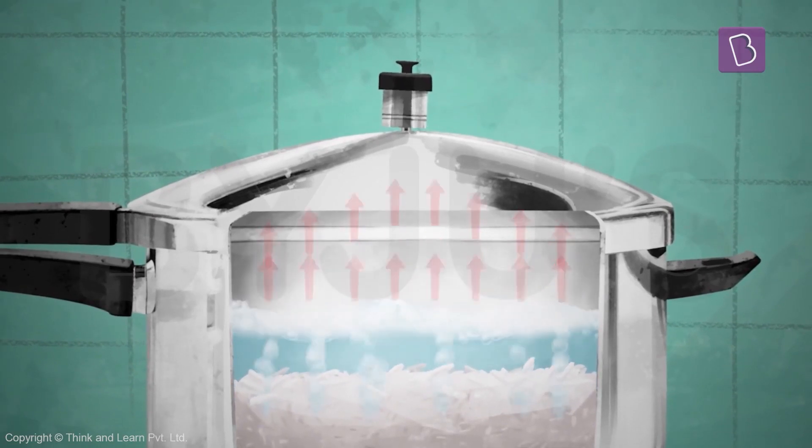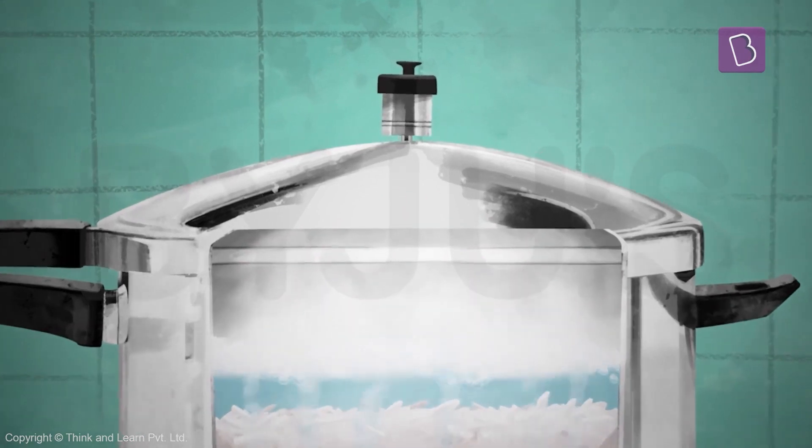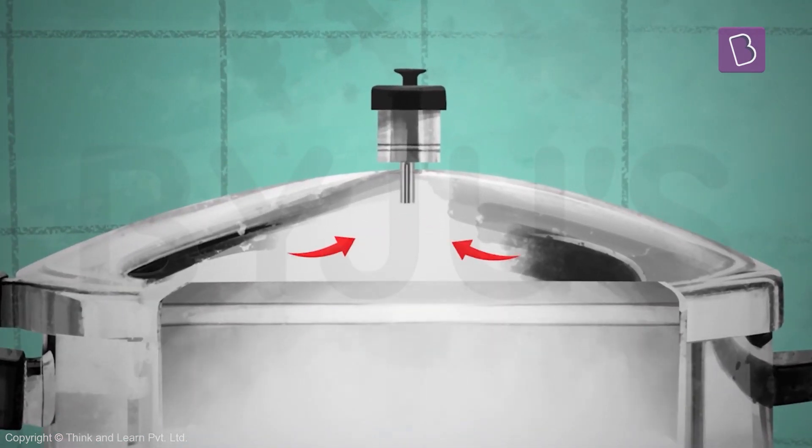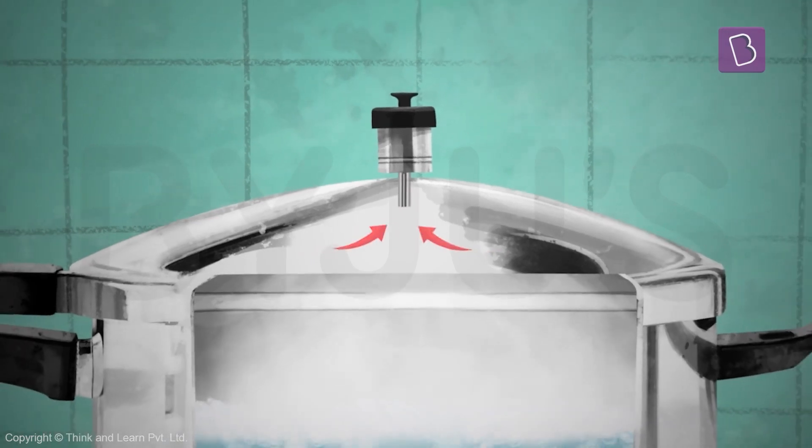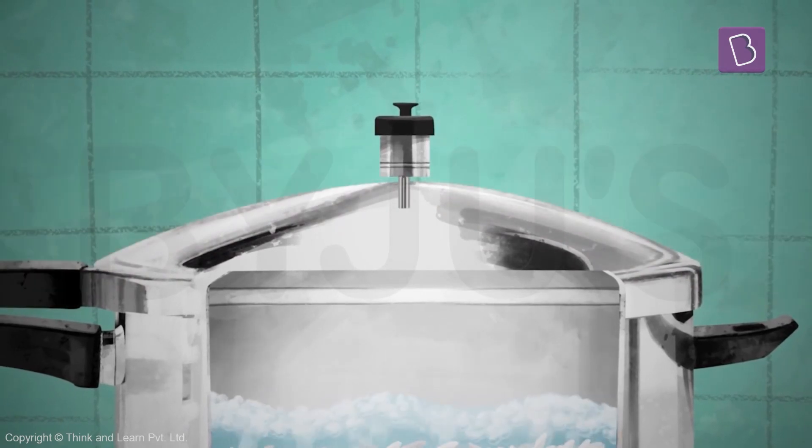It pushes up against the air and the air is trying as hard as it can to get out of the cooker. Thanks to the little opening in the lid, all the pressure is let out slowly.